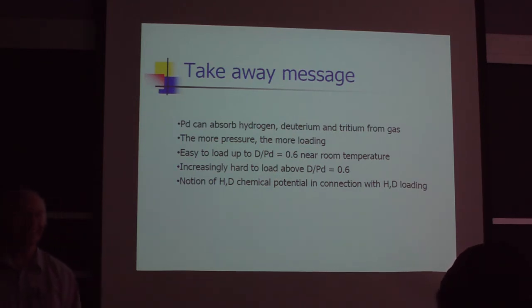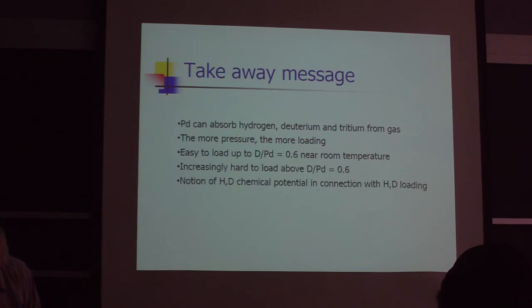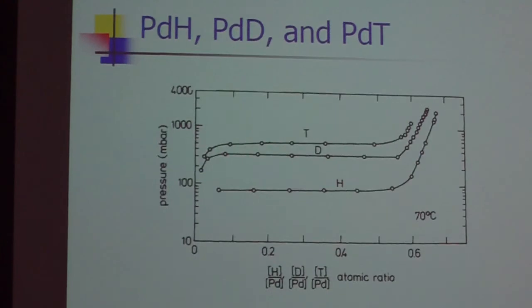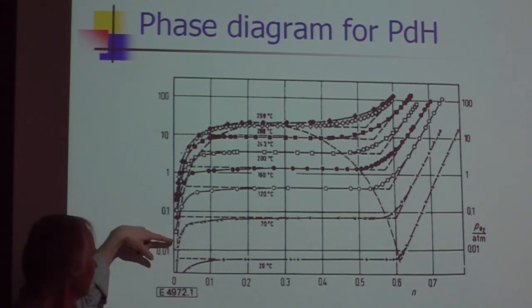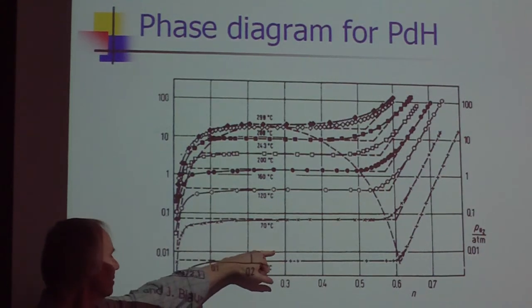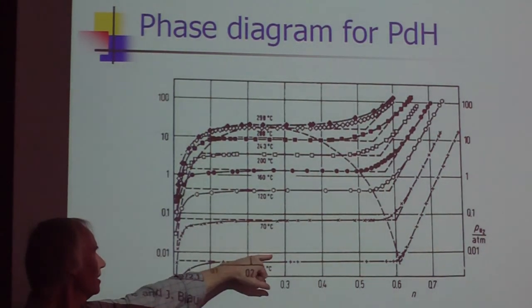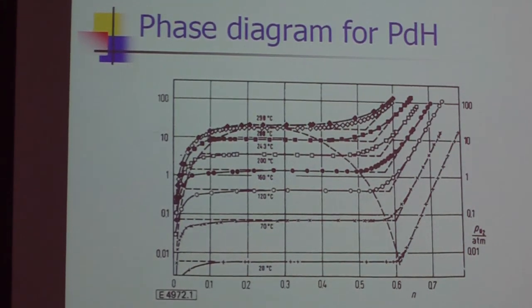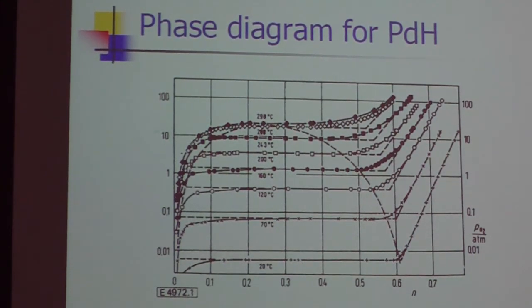Wasn't it several hundred atmospheres to load deuterium to 0.6? No, not several hundred. It's a small amount. This is a hundredth of an atmosphere at 20°C, so at room temperature would be a little bit higher, probably a hundredth of an atmosphere or so to get to 0.6.